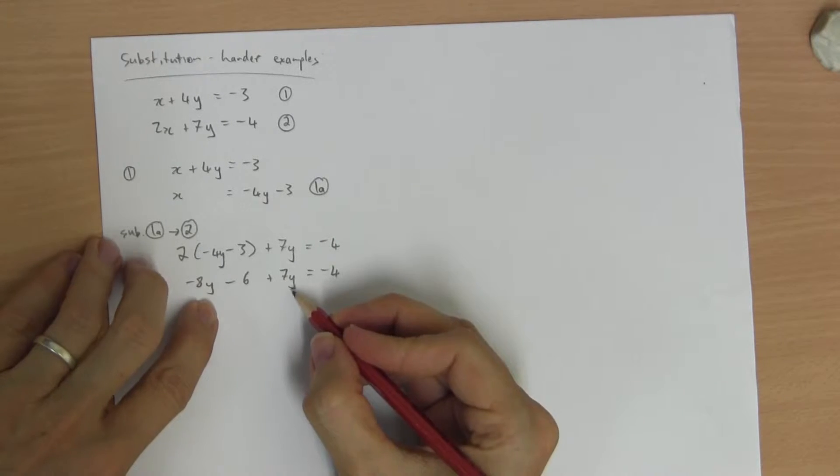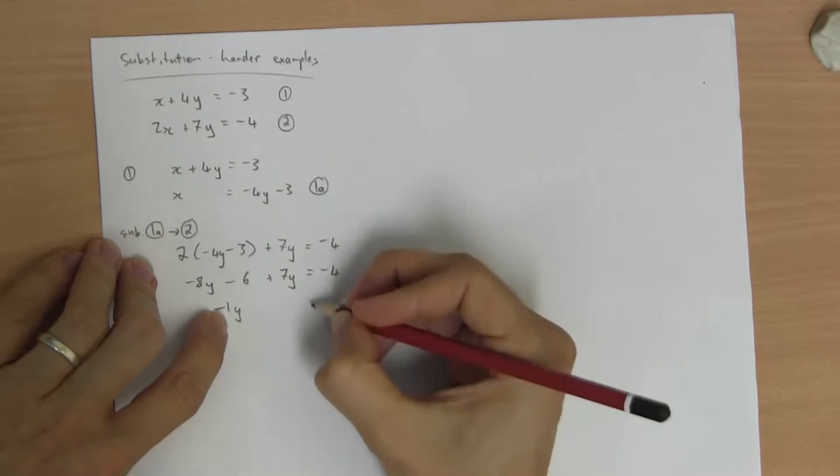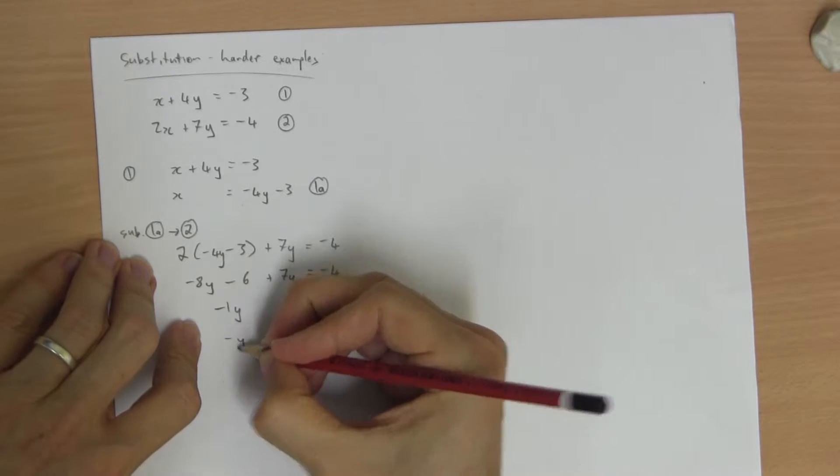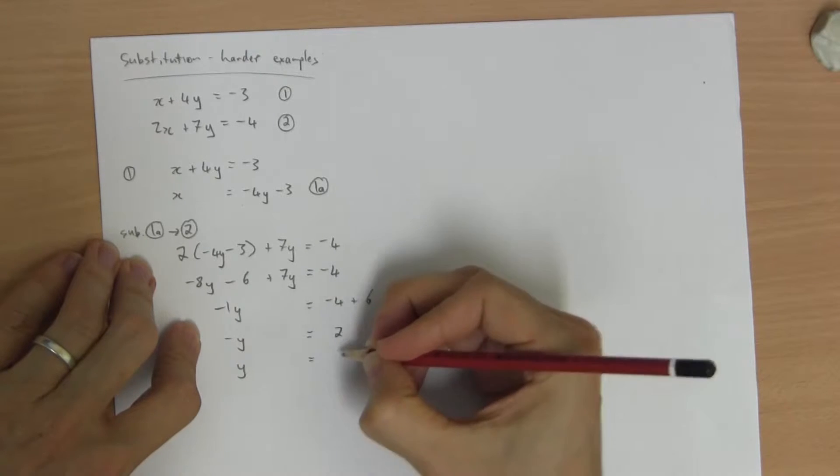Keep the y's here. Negative 1y, you don't need that one, is negative 4 plus 6. Negative y is positive 2, y must be negative 2.